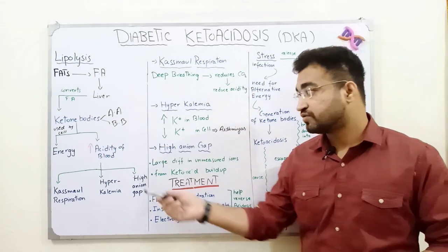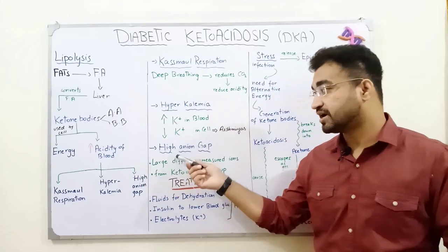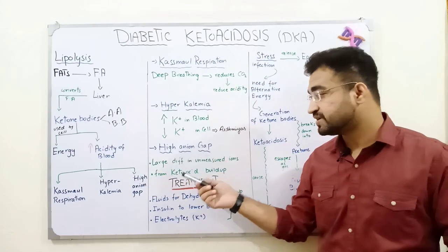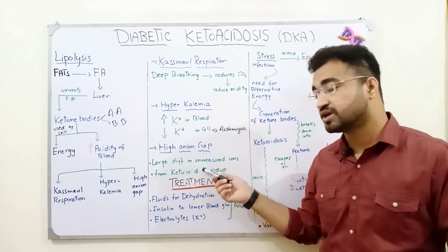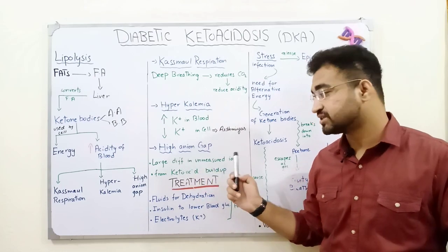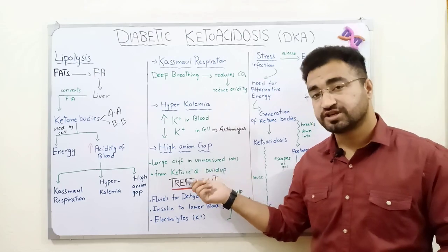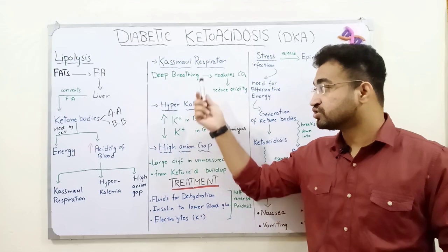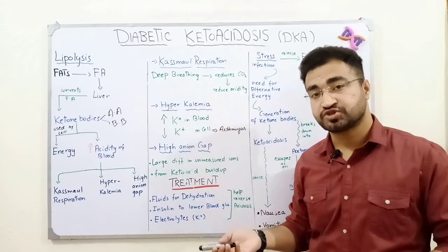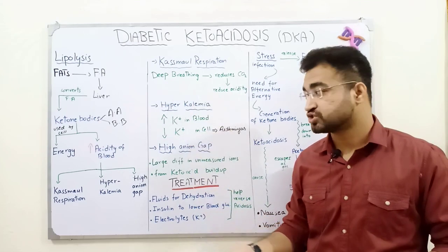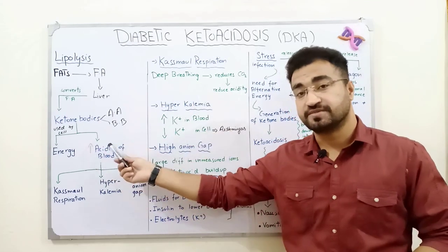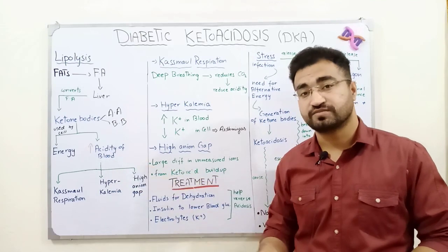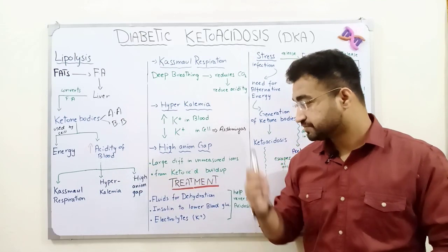The third complication of high acidic blood is a high anion gap, which basically reflects the large difference in unmeasured ions due to the build-up of keto acids. These are the three main complications that the body faces as a result of high blood acidity in DKA.